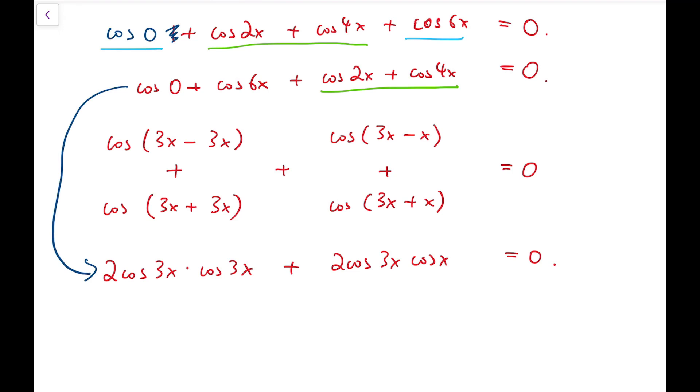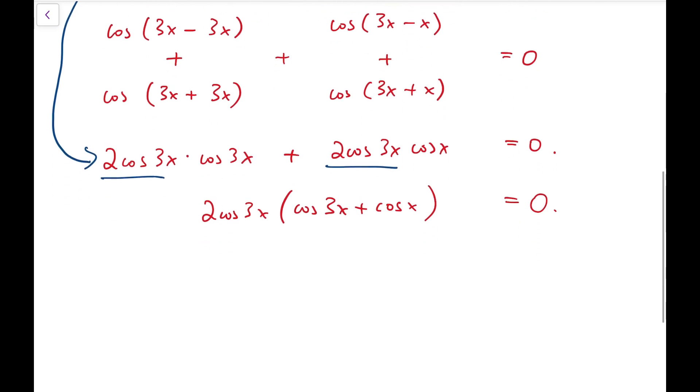Now we notice a common factor of 2cos 3x on both terms, so we factor it out. This means either cos 3x = 0 or cos 3x + cos x = 0.